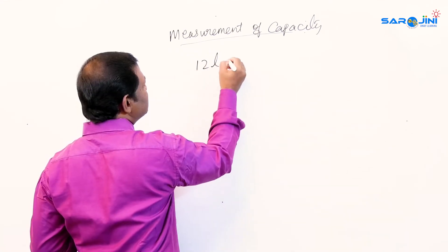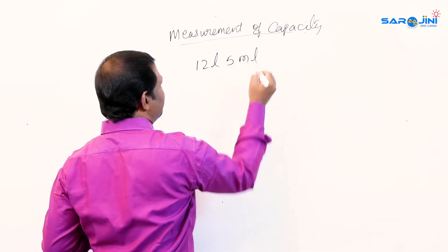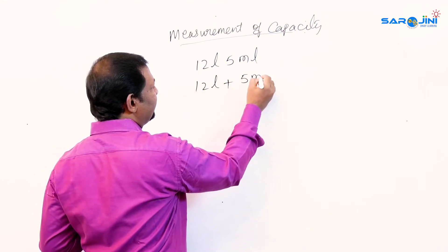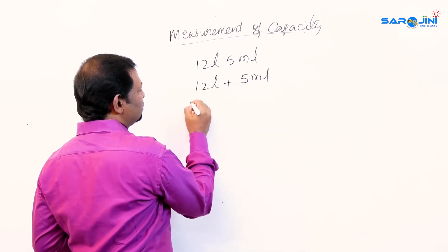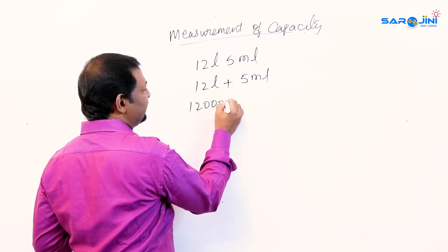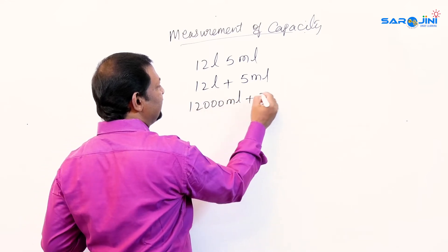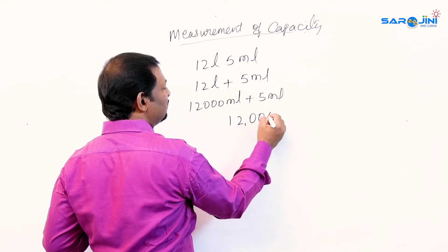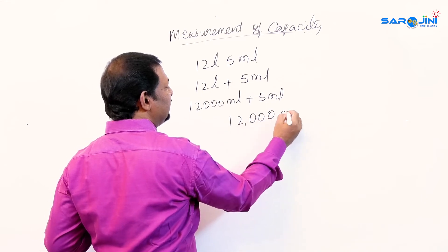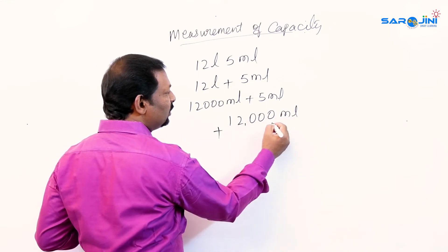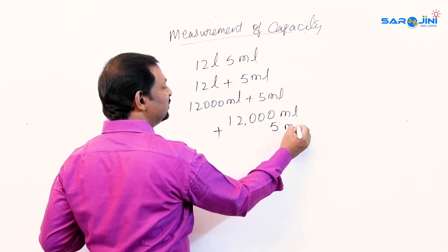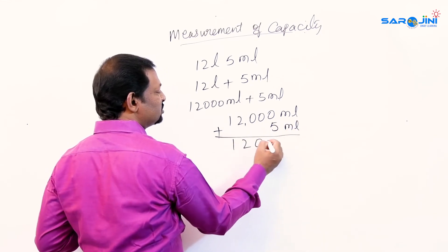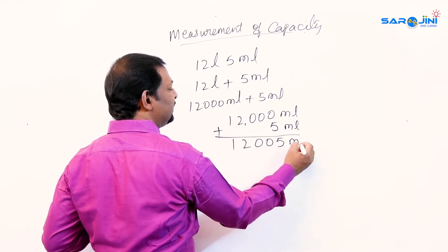Suppose 12 liters 5 milliliters is given. So 12 liters plus 5 milliliters means 12,000 milliliters plus 5 milliliters. On adding, that is 12,000 plus 5, which equals 12,005 milliliters.